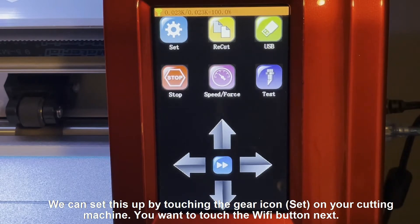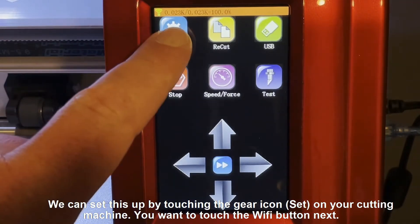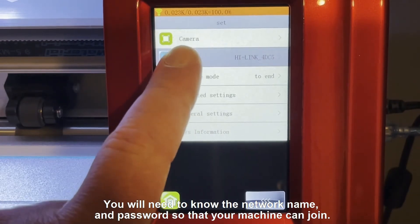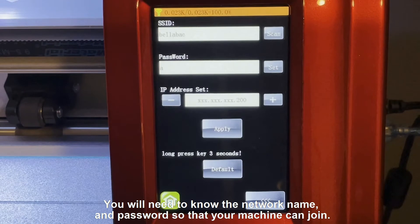We can set this up by touching the gear icon on your cutting machine. You'll want to touch the Wi-Fi button next. You'll need to know the network name and password so that your machine can join.